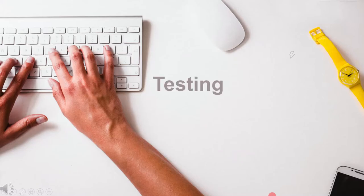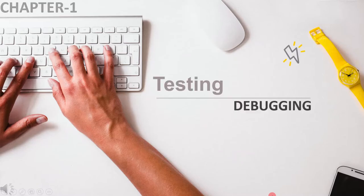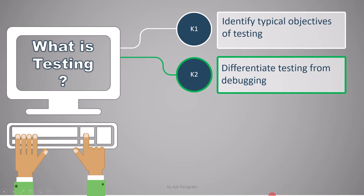In this lecture, we are going to understand about testing and debugging. The learning objective is to differentiate testing from debugging. This topic is marked as K2, which means you have to understand the topic.